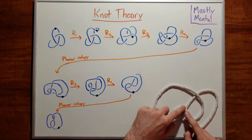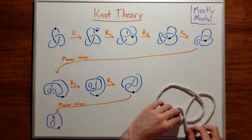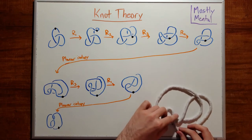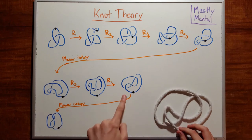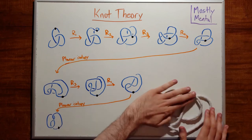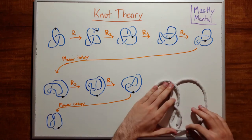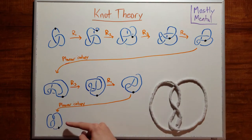Then we pull this strand over this crossing with another R3. We undo the loop with another R1. And then finally, one more round of planar isotopy gives us our final result.